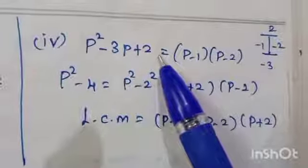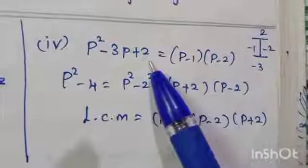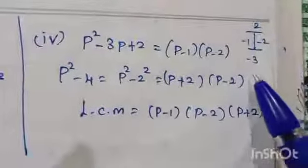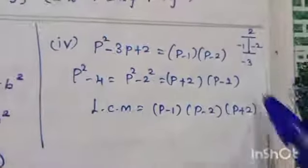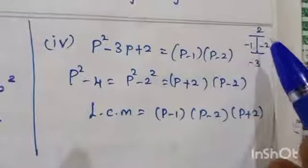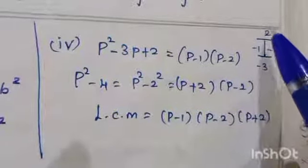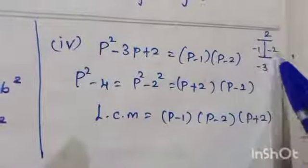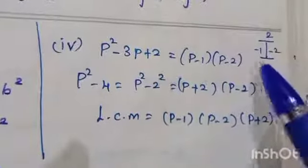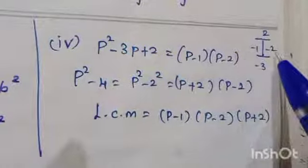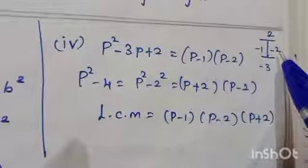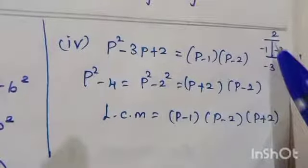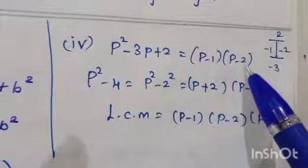Problem 4: factorize p²-3p+2. Product value is 2, sum value is -3. Factors: -1 and -2 satisfy both ((-1)×(-2)=2, (-1)+(-2)=-3). So p²-3p+2 = (p-1)(p-2). For p²-4: since 4 = 2², this is a difference of squares a²-b² = (a+b)(a-b), giving (p+2)(p-2).